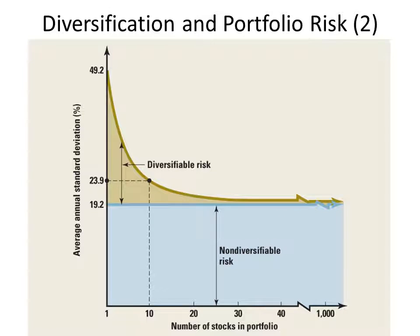Here's the same idea in a graphical format for visual learners. The first stock has a 49.2% standard deviation, and as we add stocks, that standard deviation comes down until it gets very close to 19.2% — but doesn't drop below it. Thus, 19.2% must be our level of non-diversifiable or systematic risk — that's the blue part, risk you just can't get rid of. The tan/greenish part is diversifiable risk, which we can eliminate by adding non-perfectly correlated assets to our portfolio.